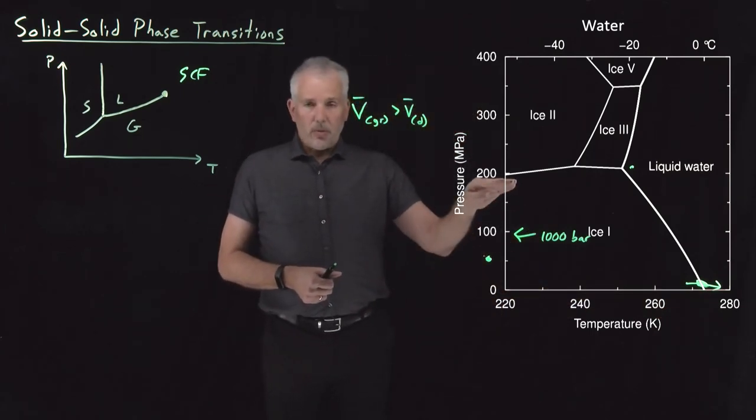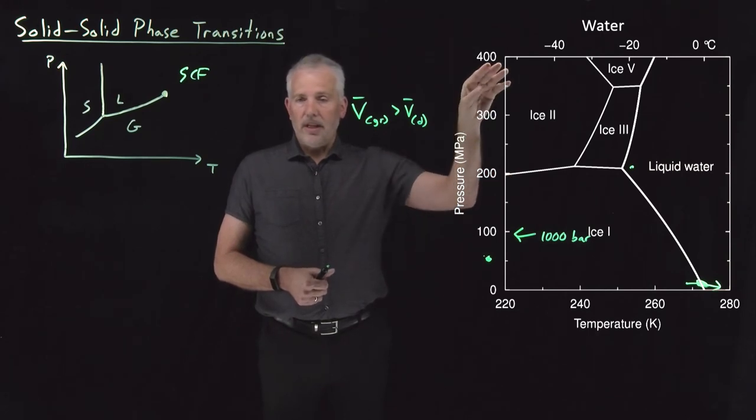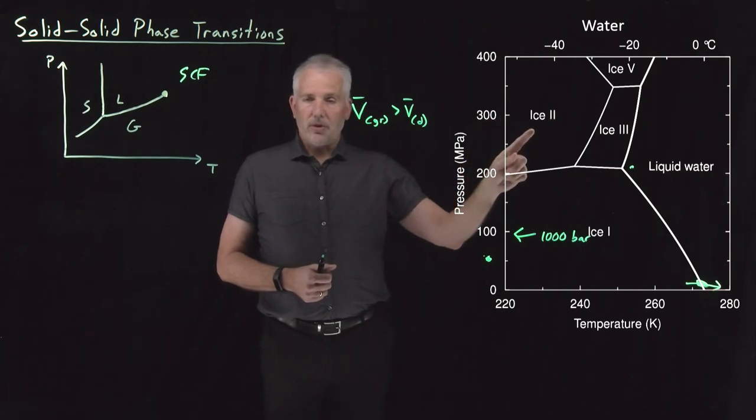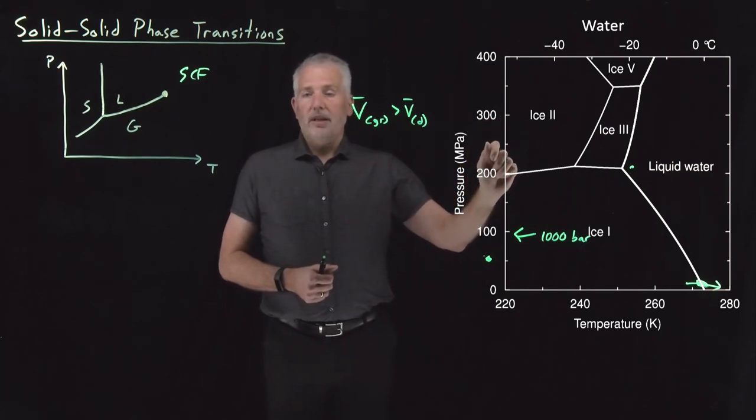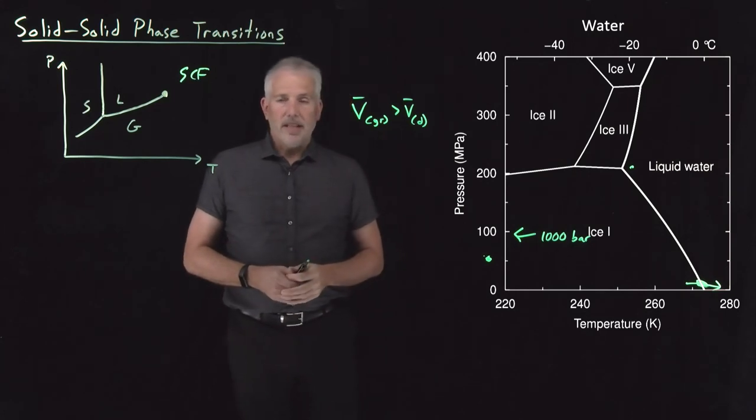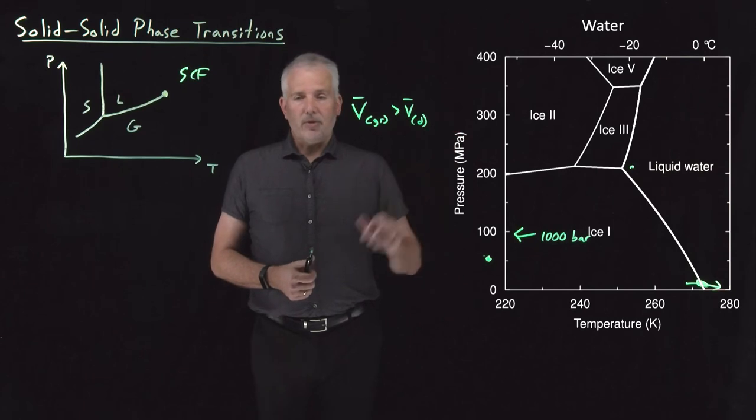So we don't typically work at pressures as high as 2,000, 3,000, 4,000 atmospheres, except in very specialized circumstances. So you're probably not familiar, don't have any first-hand experience, certainly with ice two or ice three. But those are phases that do exist and become more stable than the traditional phase of ice as we go to high pressures.